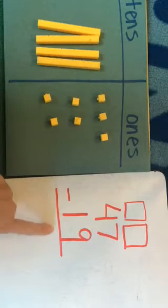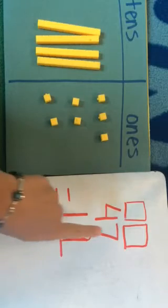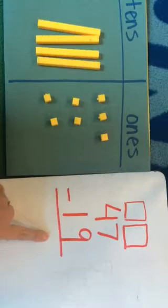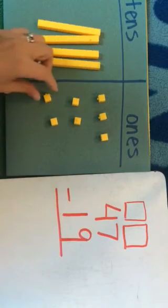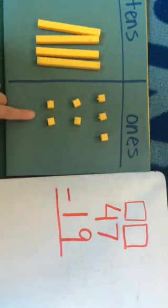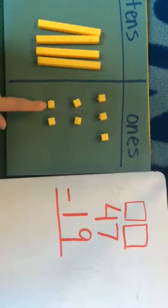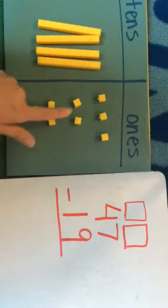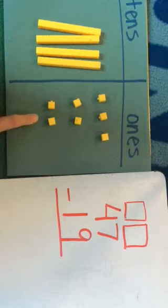Now we need to look at our numbers over here. When we were adding we had to add our ones place first. When we subtract we have to do the same thing. So we are going to subtract our nine from our seven ones. Now if we look over here, can I take nine ones away from here? The answer is no. You cannot take away nine ones if you only have seven ones here. So that means we need to get more ones from somewhere.